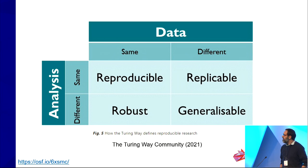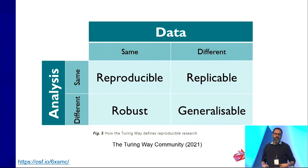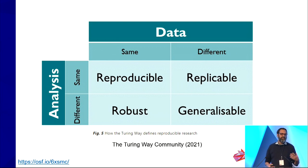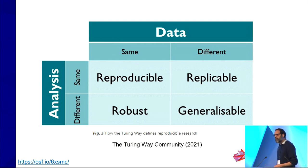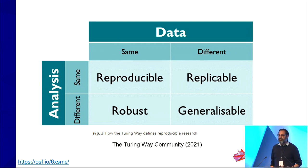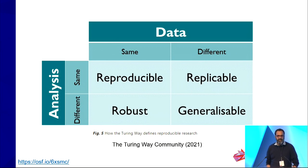This is a figure that's often shown to make sense of the different terminology we use in metascience. If we look at whether the data and analysis is the same or different, we can distinguish between reproducibility, replication, robustness, and generalizability. However, like all two-by-two tables, there's a lot of complexity hidden within here.